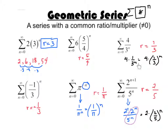4 divided by 3 to the n, we rewrote it. Pi to the negative n, we rewrote it. But that's what we're looking for — that's what makes something geometric. It's a number raised to the nth power.